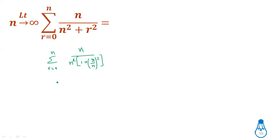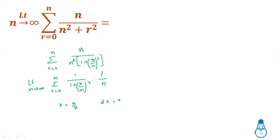Canceling n, the summation becomes: r = 0 to n of 1 divided by (1 + r/n)² into (1/n). Taking limit n tends to infinity and using standard substitution x = r/n, dx = 1/n: lower limit r=0 gives x=0, upper limit r=n gives n/n=1. The integral is 1 divided by (1 + x²) dx from 0 to 1.